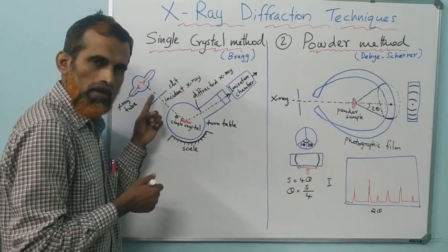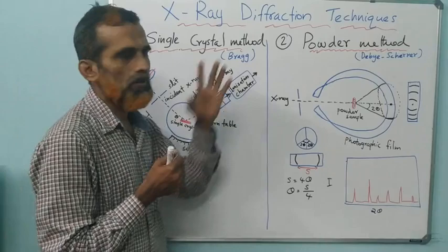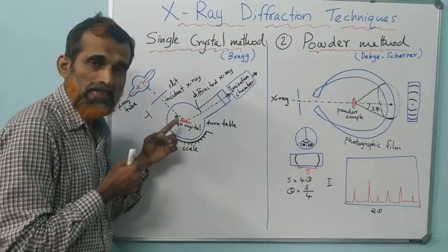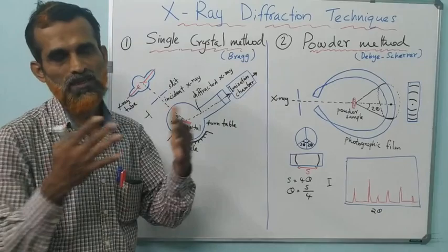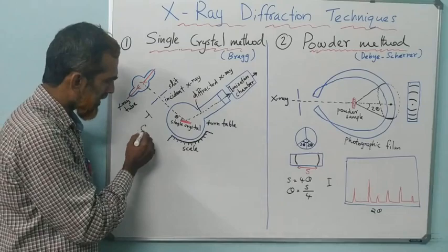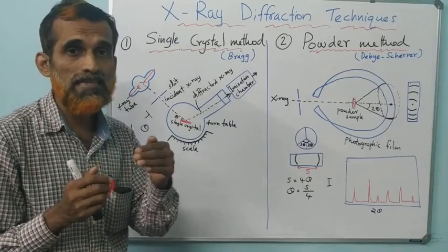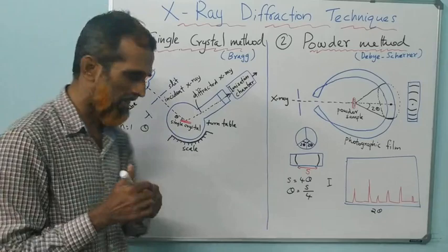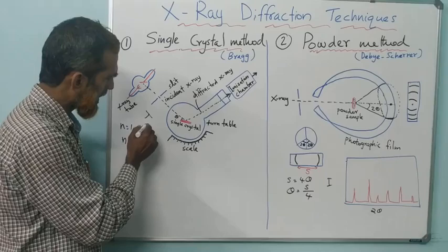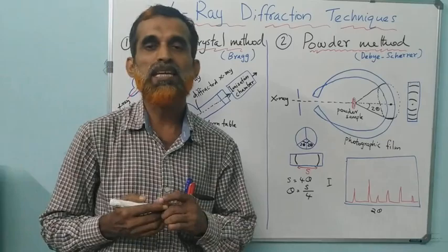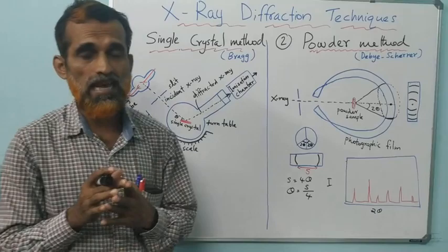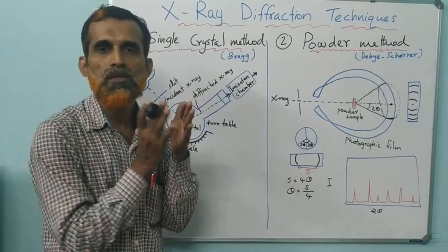X-rays get diffracted from one of the planes and are recorded. You measure the minimum angle at which you get maximum intensity due to constructive interference. This minimum angle is theta for first-order diffraction, n = 1. Then you can turn and increase the angle to get the next minimum angle at which the second intensity maximum is obtained — that is second-order diffraction. You get various theta values. Then you change the position of the crystal and mount it differently so that another set of crystal planes is suitably placed for diffraction.